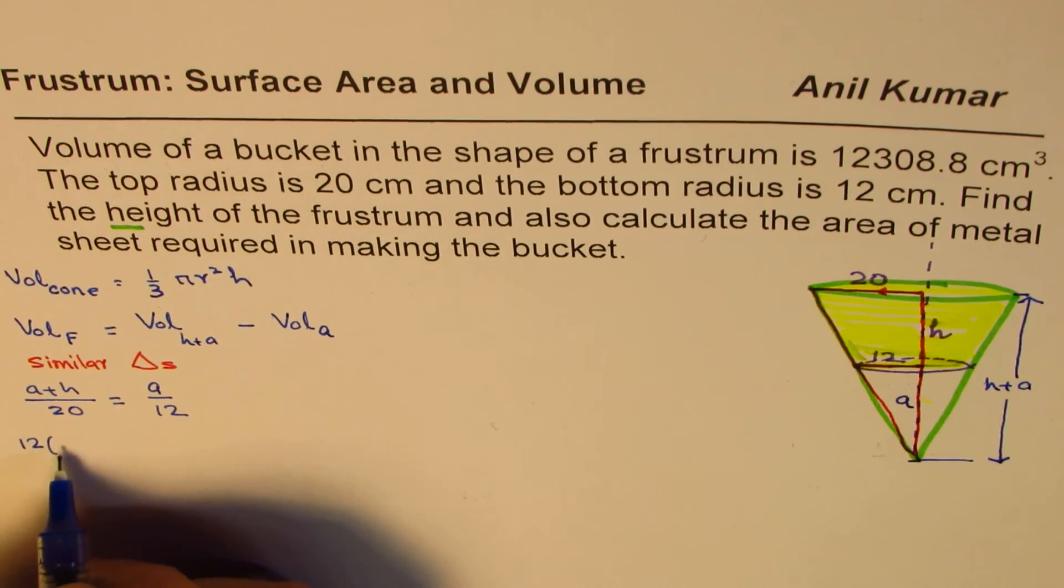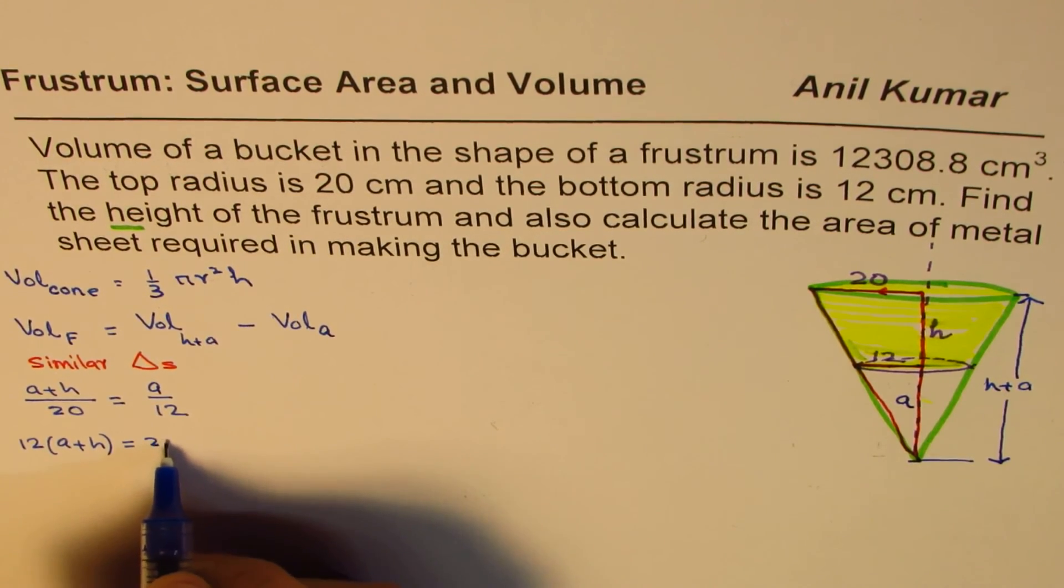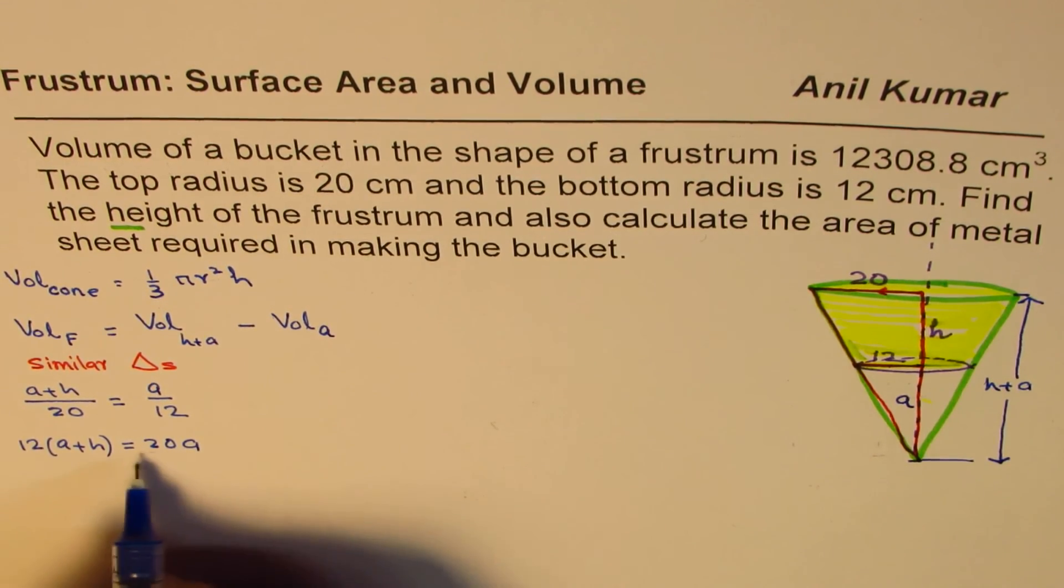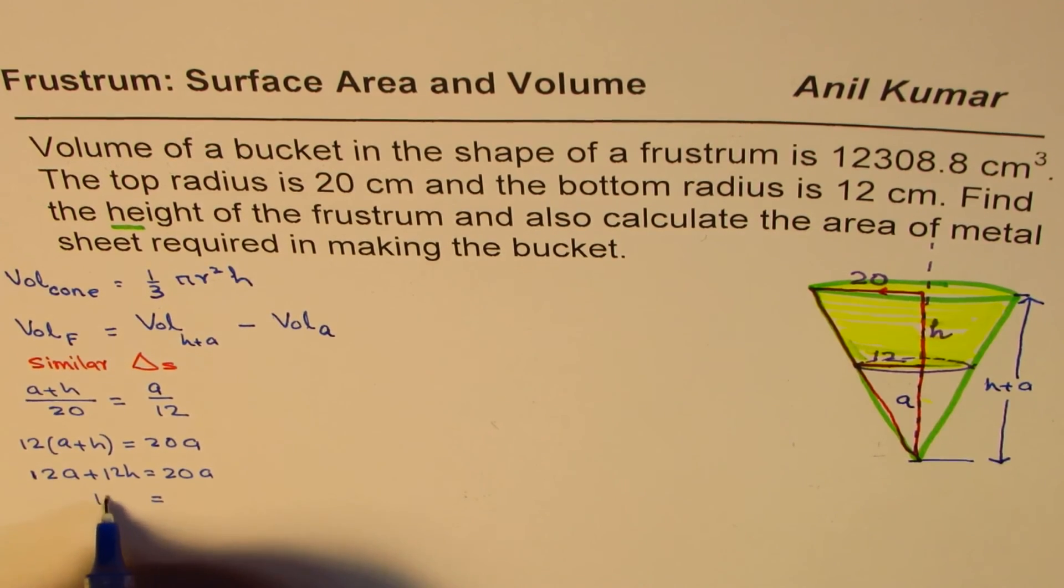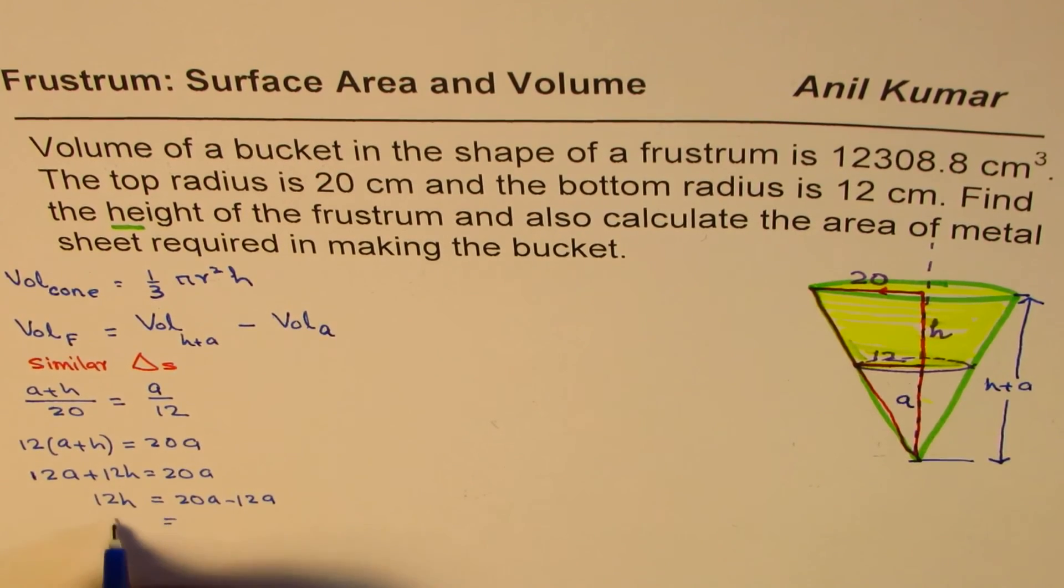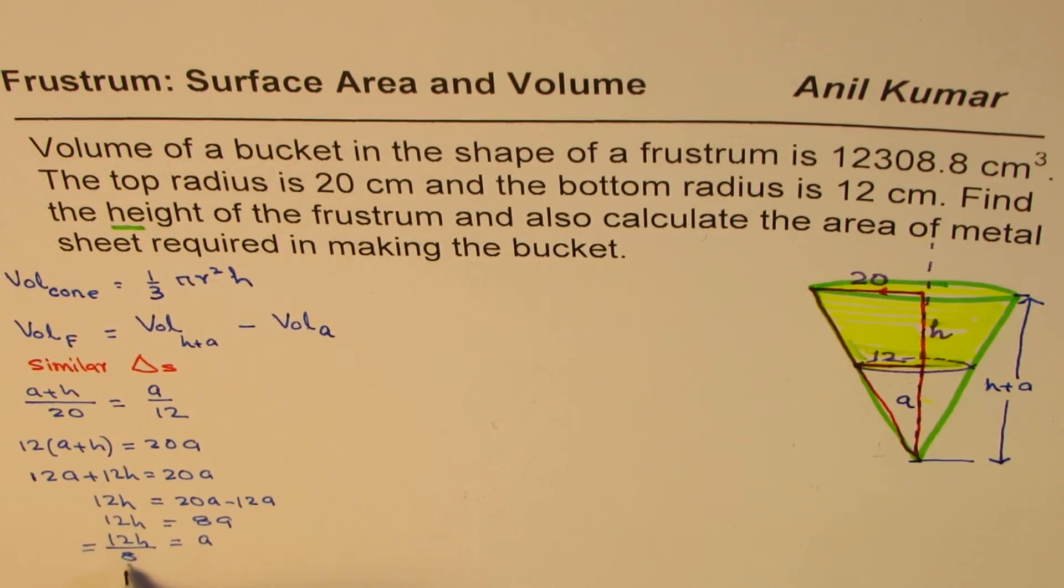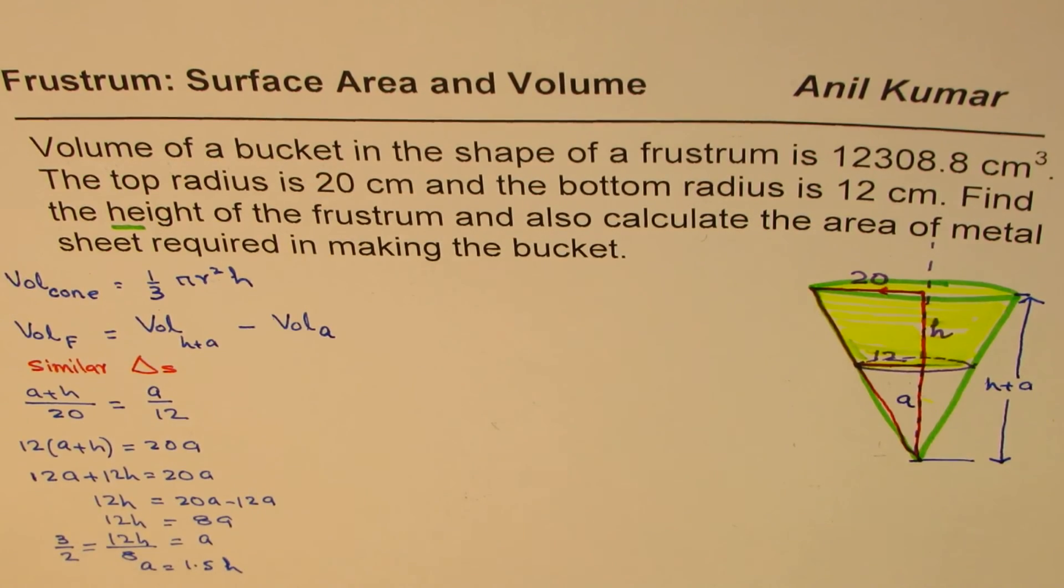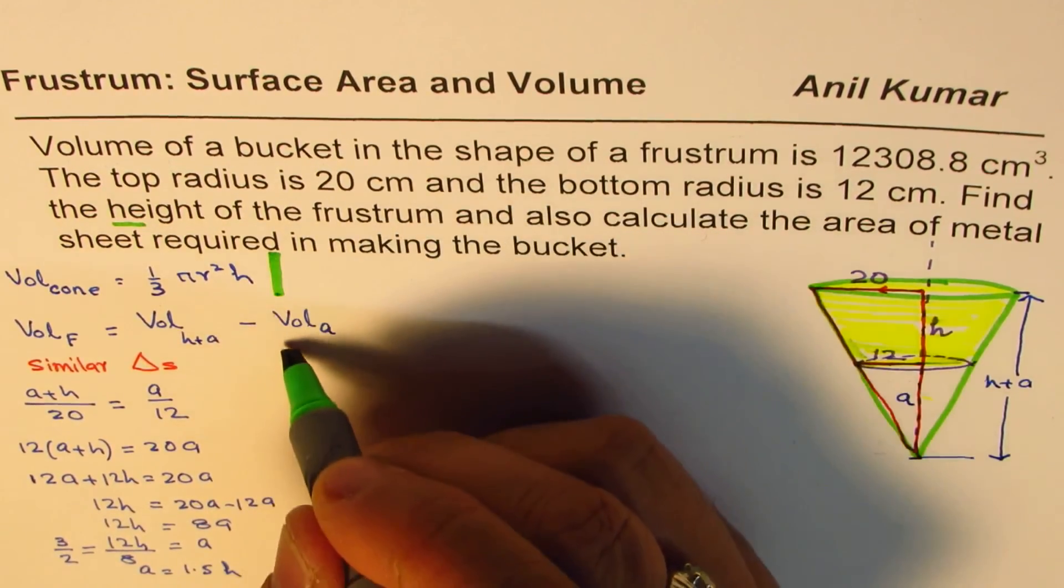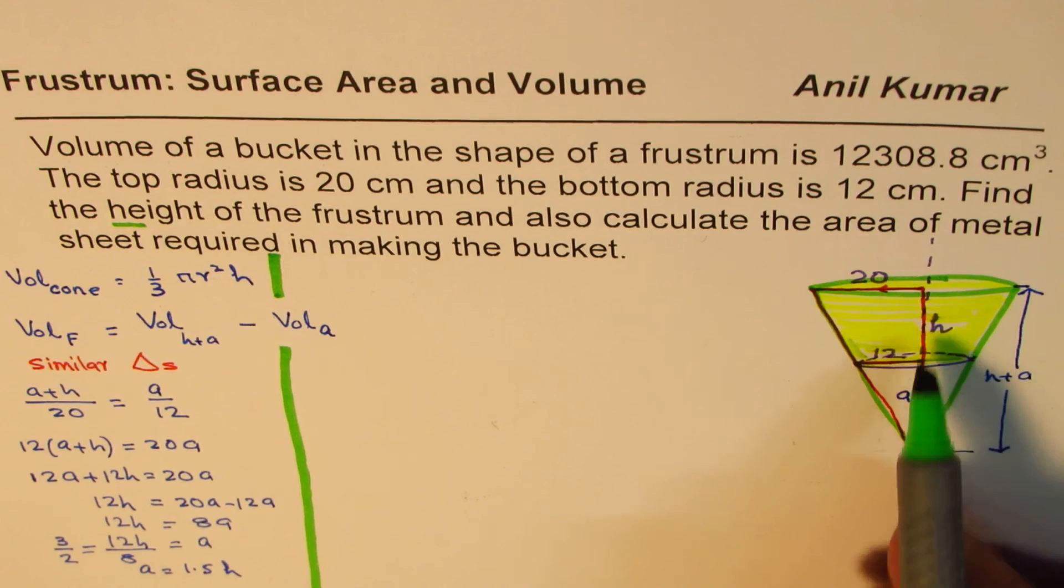This relation we get from similar triangles, and that will relate A with H. So we will have this volume equation only in height H instead of two variables H and A. Let's relate them. We cross multiply, so 12(A+H) equals 20A. So we have 12A plus 12H equals 20A, and we'll rearrange. We have 12H equals 20A minus 12A, which is 12H equals 8A, or A equals 12H over 8. You can divide both by 4: 3/2 or 1.5. So A is 1.5 times the height. So what we have done at this stage is we've derived the relation between A and this height.